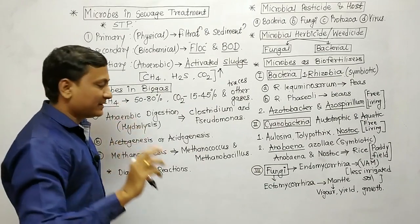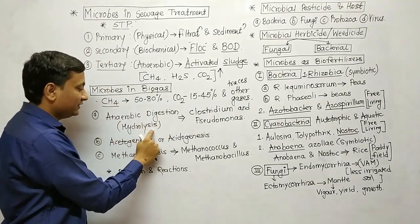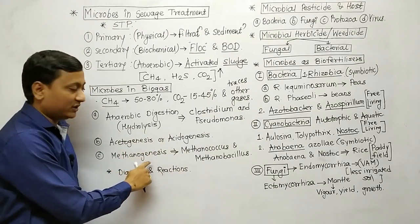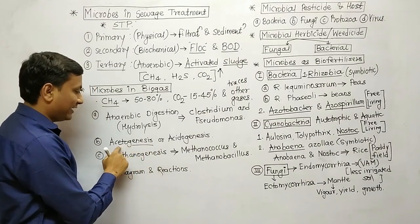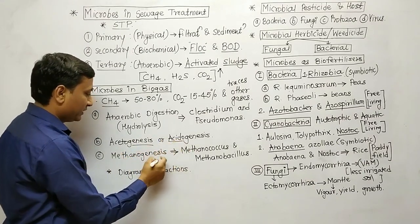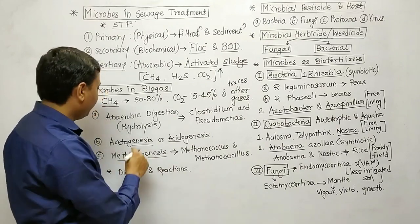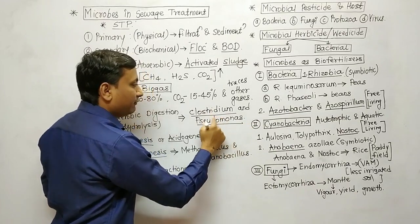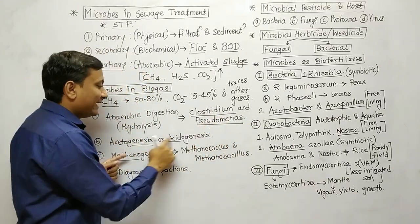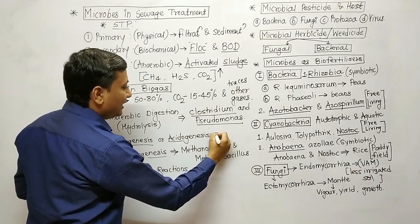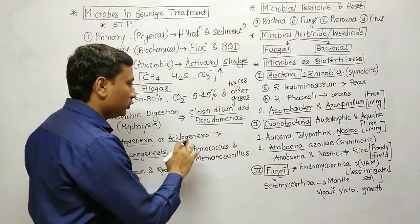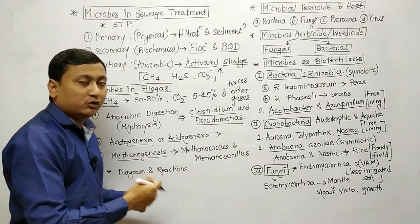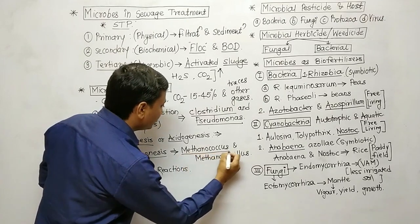In biogas production there are three steps. First step is anaerobic digestion, also called hydrolysis — microorganisms used are Clostridium and Pseudomonas. Second is acetogenesis, also called acidogenesis — acidogenic bacteria are used. Third is methanogenesis — methanogenic bacteria are used, for example Methanococcus and Methanobacillus. Coccus means circular shape and bacillus means rod shape.